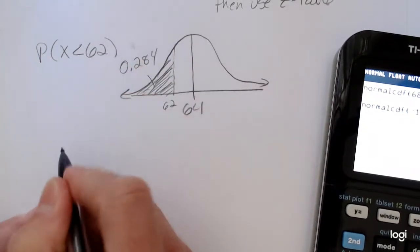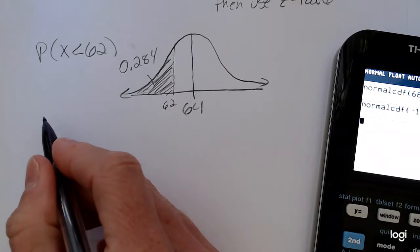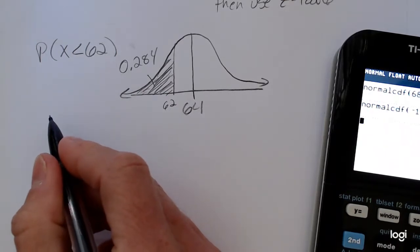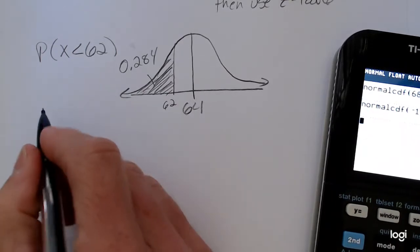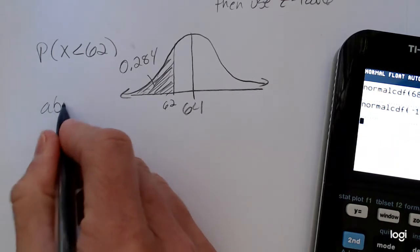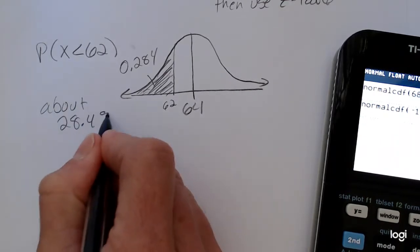And then rounding to three decimal places, I get 0.284. So to answer the question, what percent of women have a height less than 62 inches? That's going to be about 28.4%.